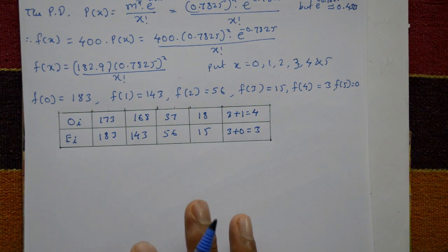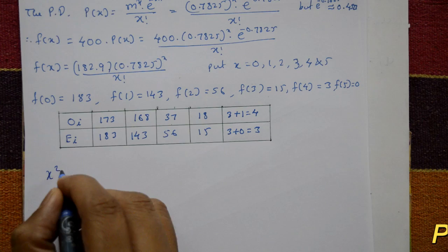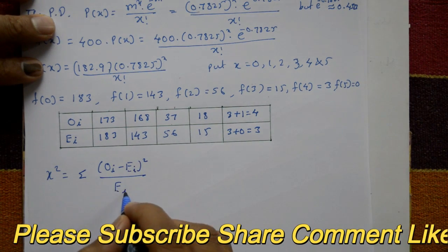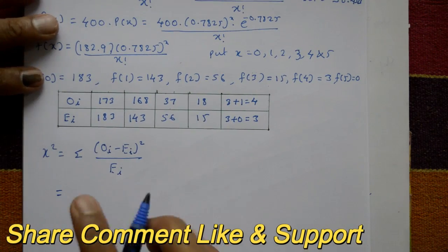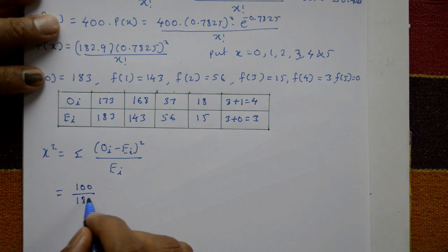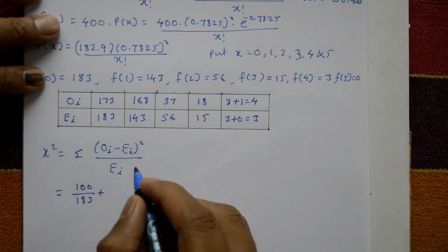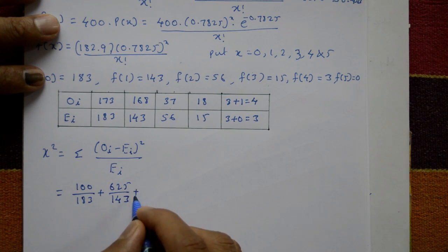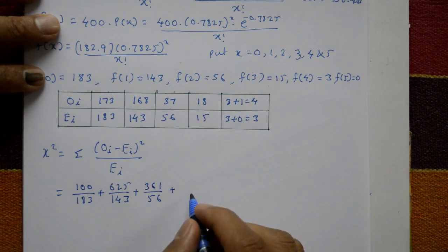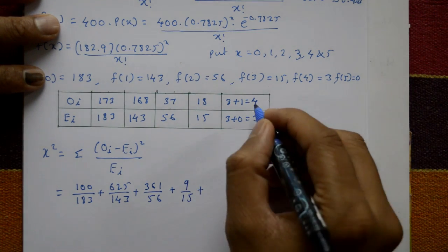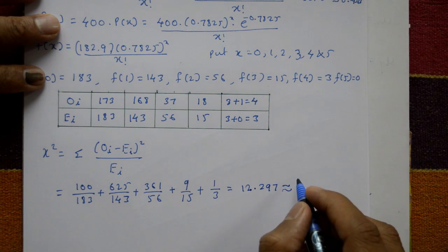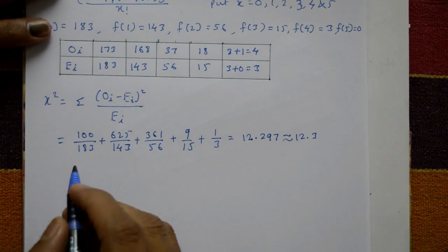Applying the chi-square formula: chi-square = summation of (O − E)² / E. This gives: (173 − 183)² / 183 = 100/183, plus (168 − 143)² / 143 = 625/143, plus 361/56, plus 9/15, plus (4 − 3)² / 3 = 1/3. Adding all terms gives chi-square approximately equal to 12.3.